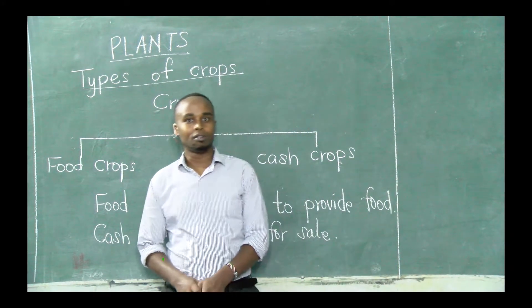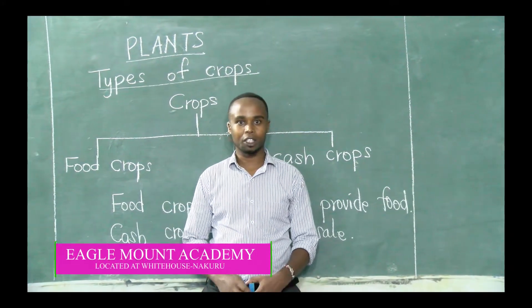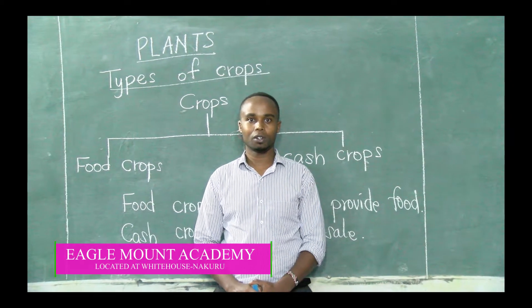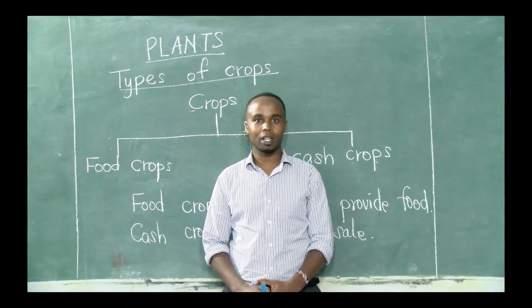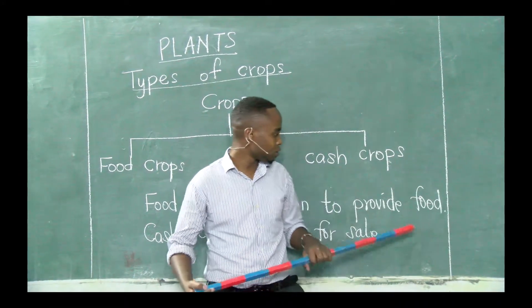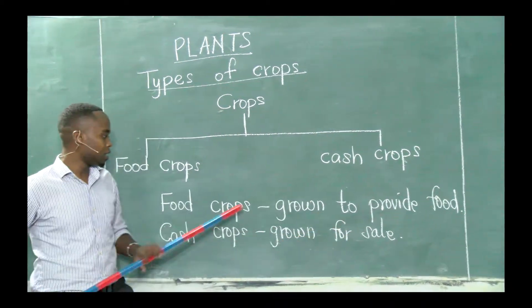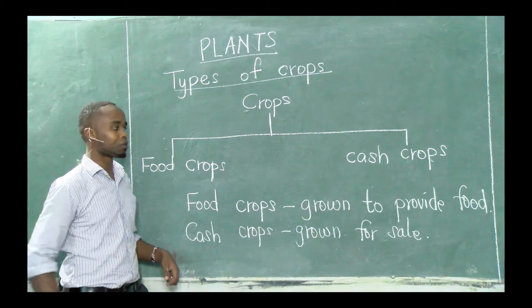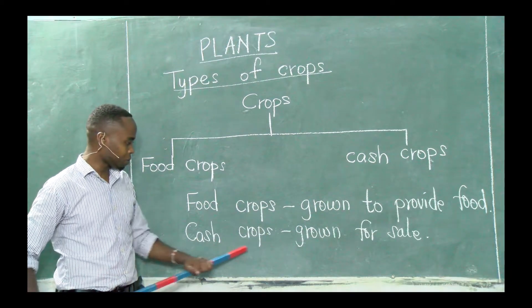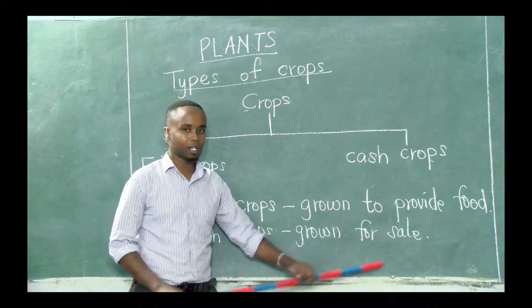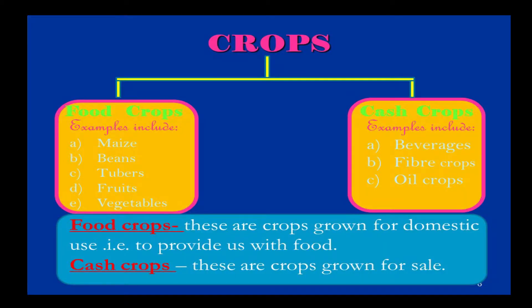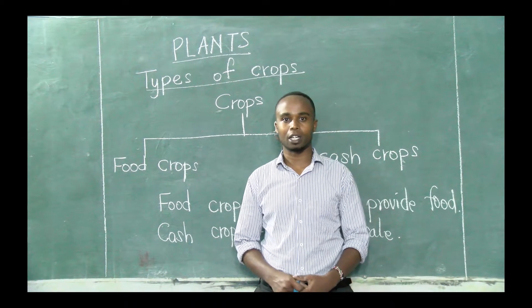Somebody might ask you the difference between food crops and cash crops. It is very simple. Food crops are crops that are grown for food — they are grown to provide us with food. Cash crops are crops that are grown for sale. We grow them to sell them, and when we sell them, we earn money. So that is the difference between food crops and cash crops.